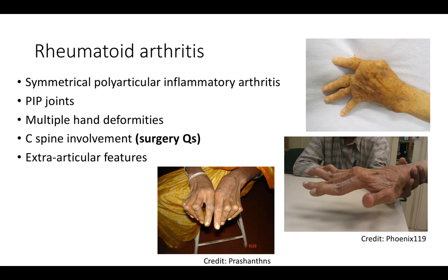An important surgical consideration in rheumatoid arthritis is atlantoaxial subluxation - movement at the C1/C2 joint can cause displacement and pressure on the spinal canal. Anyone with rheumatoid arthritis going for surgery needs head flexion for intubation, which can cause catastrophic cord compression. Therefore, anyone with diagnosed rheumatoid arthritis going for surgery should have X-rays of the upper cervical vertebrae to check for this disorder.